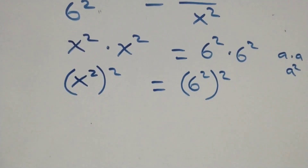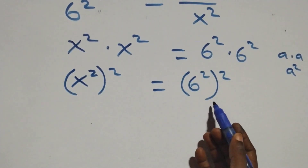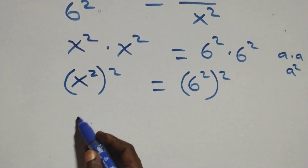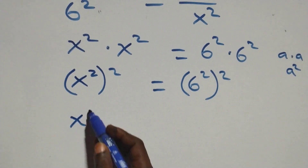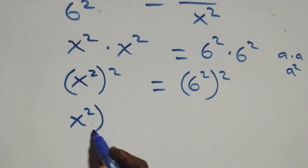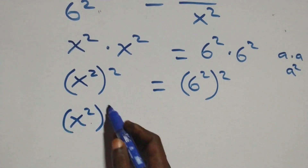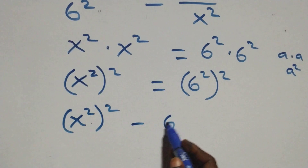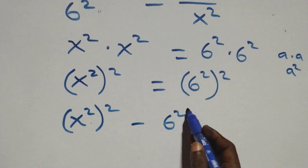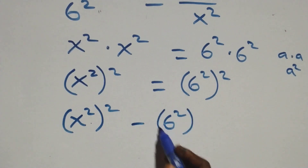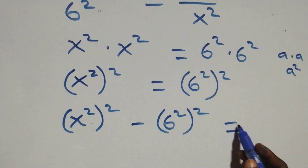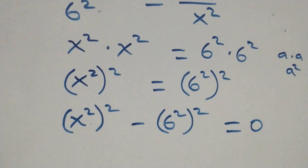The next step: we take everything on the right-hand side to the left-hand side, and we have x squared squared minus 6 squared squared equals 0.